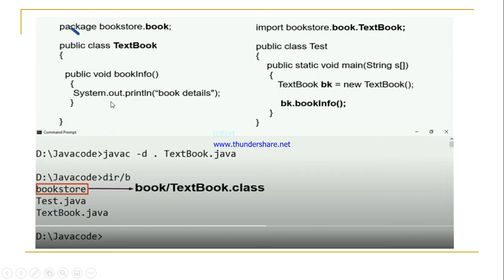Now, how is this sub-package imported? We already saw there are three ways. First, we can use dot-star (package.*) for importing all classes in a package. Second, we can use the package name dot class name. Third, we use detailed addressing. Here, the second way is used: bookstore.book.Textbook — using the class name and the sub-package name.